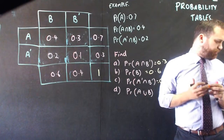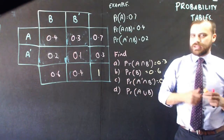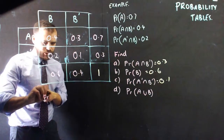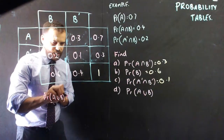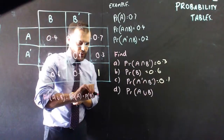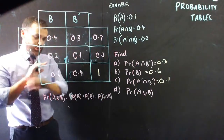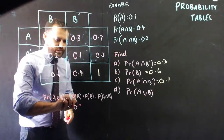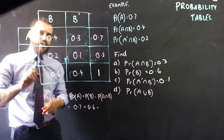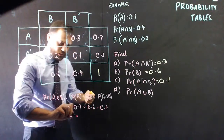That leaves P(A'∩B') — if we've done everything correctly, 0.3 minus 0.2 = 0.1 and 0.4 minus 0.3 = 0.1, confirming the table. Now the only question you can't get directly from the table is P(A∪B). But using the addition rule: P(A or B) = P(A) + P(B) − P(A∩B) = 0.7 + 0.6 − 0.4 = 0.9.